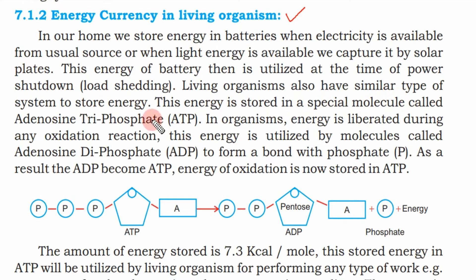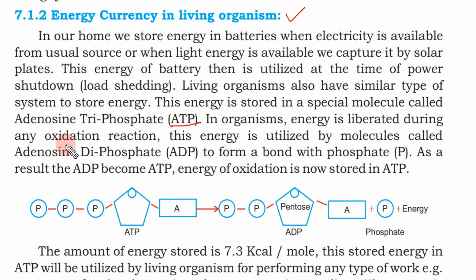This energy is stored in a special molecule called adenosine triphosphate, or ATP. In organisms, energy is liberated during oxidation reactions. This energy is utilized by molecules called adenosine diphosphate, or ADP, to form a bond with phosphate. As a result, the ADP becomes ATP.